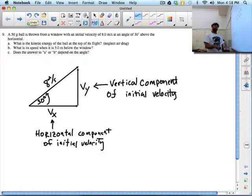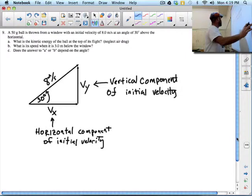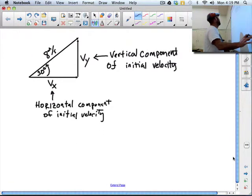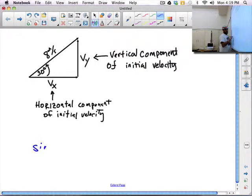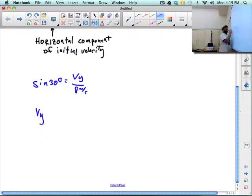Now in order to find the horizontal and vertical components of my velocity here, when this object is first launched, you just use sine and cosine. It's really no big deal. Sine 30 degrees is going to be my Y component over my eight meter per second velocity. So therefore my Y component is going to be eight meter per second. I'm going to find it times sine 30. In this case, it's not 30. I think I made a mistake.